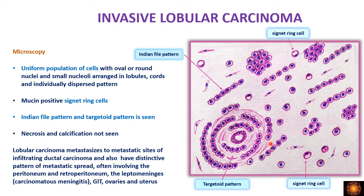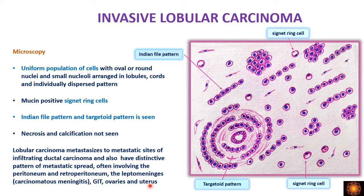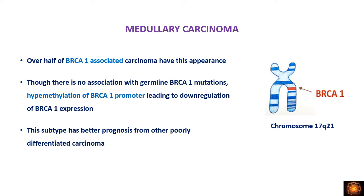Another important feature is signet ring cells — eccentrically pushed nucleus with a mucin vacuole in the cytoplasm. So microscopic features of lobular carcinoma include Indian file pattern, targetoid pattern, signet ring cells, and a monotonous cell population. Necrosis and calcifications are very rare. Distinctively, it metastasizes retroperitoneally to the GIT, adnexal structures like ovaries and uterus, and even the leptomeninges — a specific pattern of metastasis in lobular carcinoma.